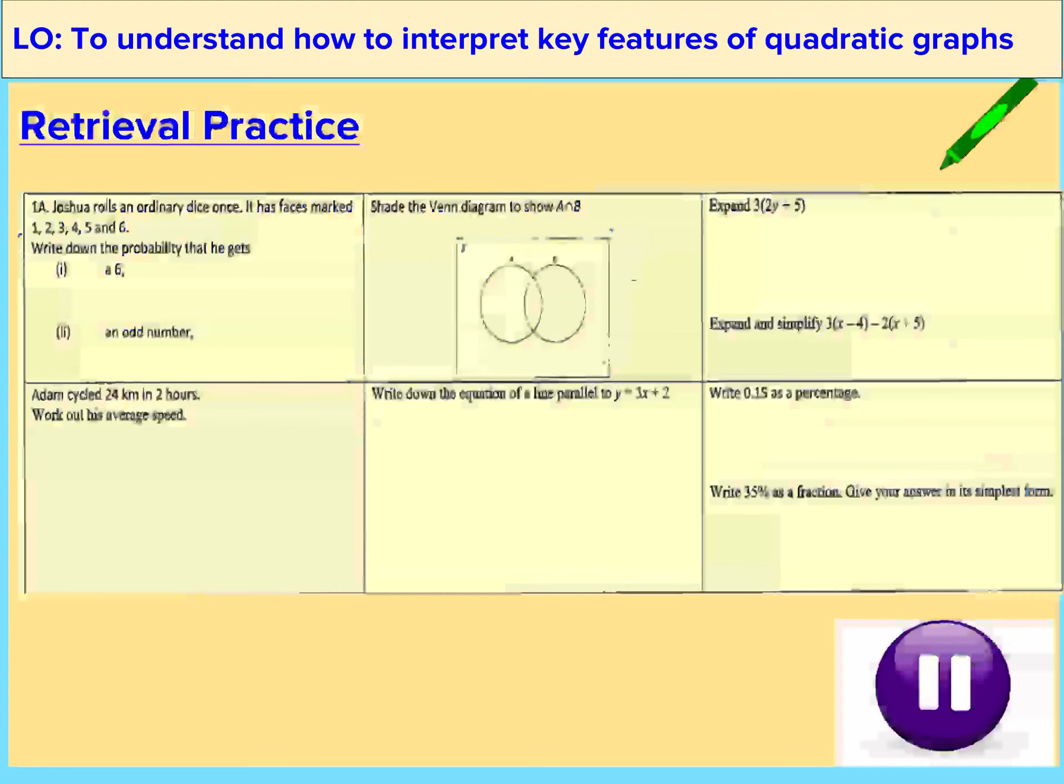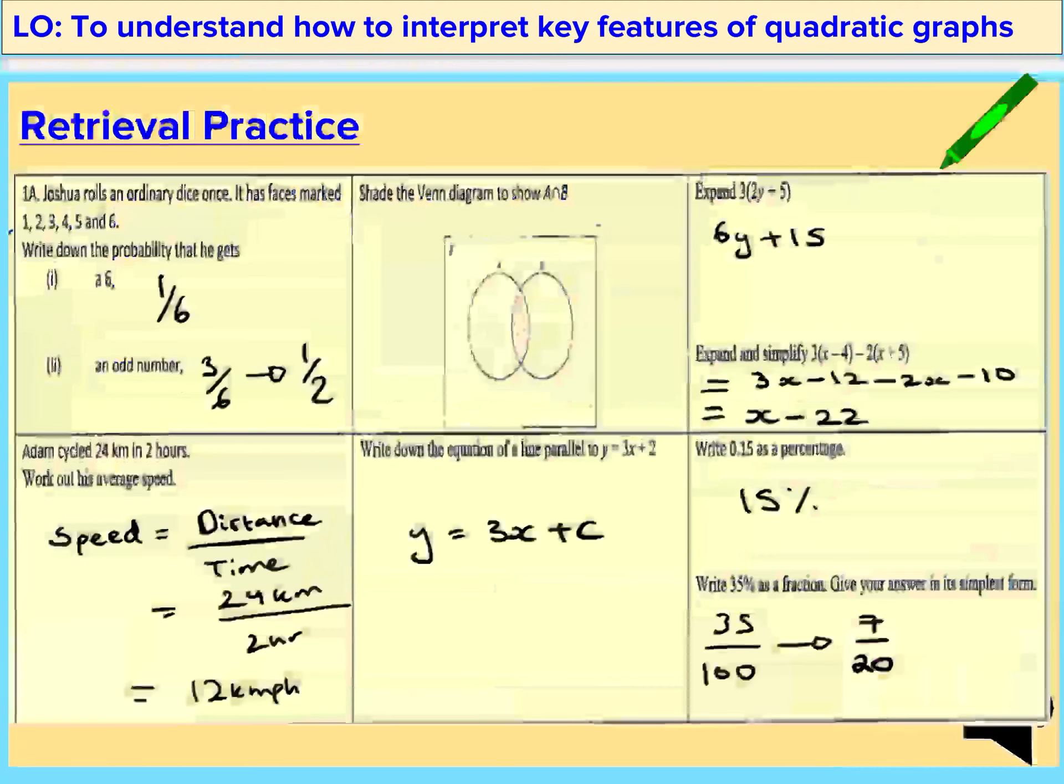Welcome to today's lesson. The learning objective is to understand how to interpret key features of quadratic graphs. The success criteria is as follows: one, able to understand the turning point of a quadratic graph; two, able to graphically find if an equation is positive or negative; and three, find the x-intercept of quadratic graphs.